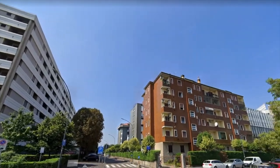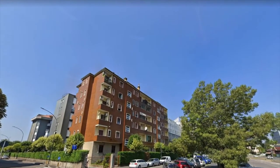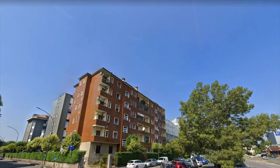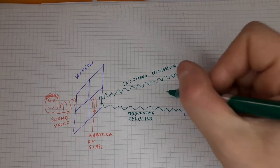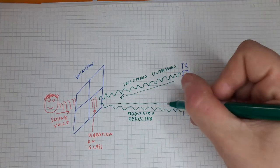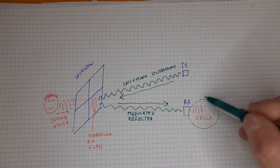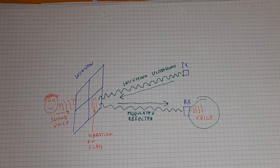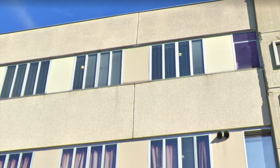What about the future of surveillance? There are other interesting techniques to experiment with. Human voice inside a room makes the window's glass vibrate. If someone sends an ultrasound beam to the window, the beam will be modulated by the vibrating glass and reflect back to the observer, carrying the voice that could then be heard.